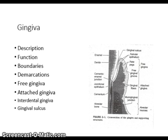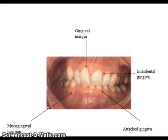Interdental papilla fill the space between two adjacent teeth. The gingival margin is the upper edge of the gingiva. The free gingival groove separates the free and the attached gingiva from each other. The mucogingival junction is the boundary of the attached gingiva and the alveolar mucosa. Attached gingiva is usually one millimeter to nine millimeters wide. The gingival margin is usually half a millimeter to two millimeters coronal to the cemento-enamel junction. The papilla is gingiva that fills the embrasure spaces; the col is non-keratinized and consists of buccal and lingual interdental papillae.